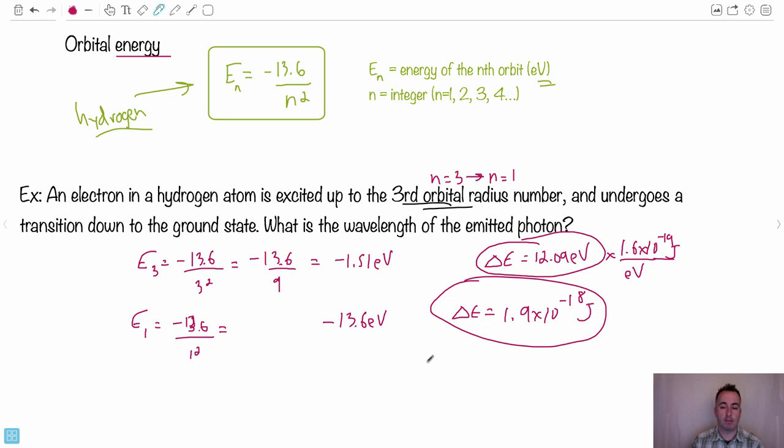So now I have my delta E in joules is 1.9 times 10 to the minus 18 joules. Why do I need that number? Well, because I want the wavelength. Remember E equals hf. And if you remember your equations, C equals f lambda, that's your wave equation. If you want to get f by itself, it gives you f equals C over lambda. So that means everywhere I see an f, I can write it with h times C over lambda. And if I want to solve for lambda, lambda equals hC divided by E.